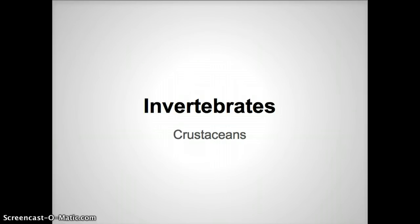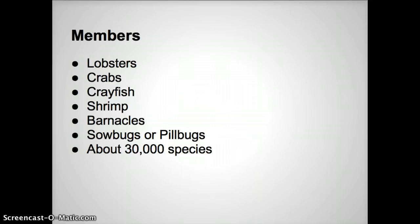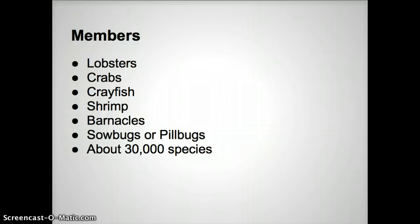Crustaceans are one of my favorite groups of arthropods. The members include lobsters, crabs, crayfish, shrimp, barnacles, sowbugs, and pillbugs. There are about 30,000 different species of organisms. Lobster, crab, and shrimp are some of my favorites — not just because we're studying them, but more because I like to eat them.